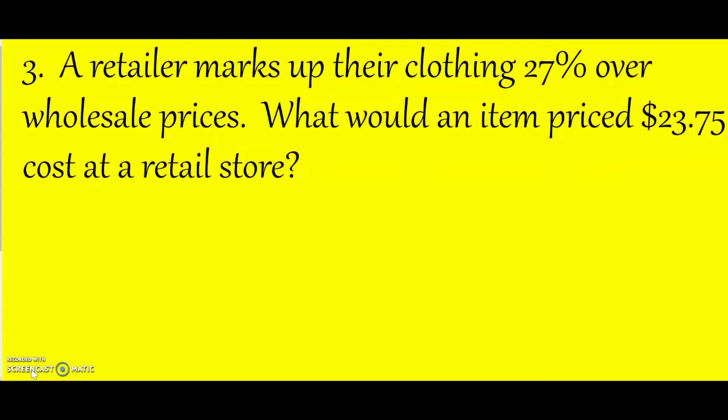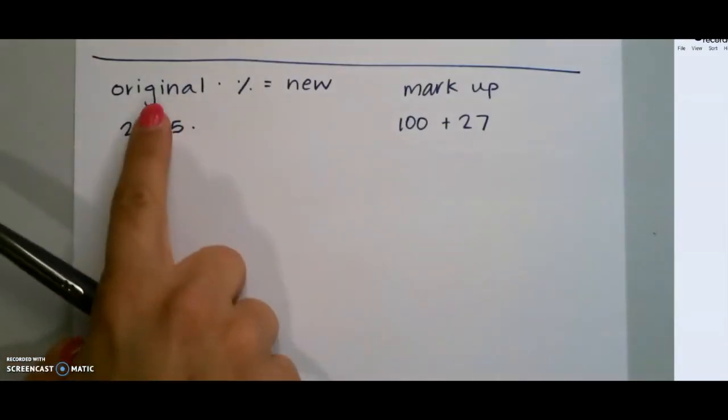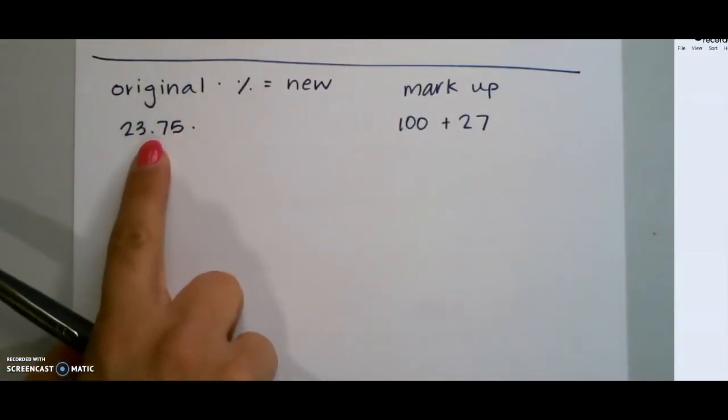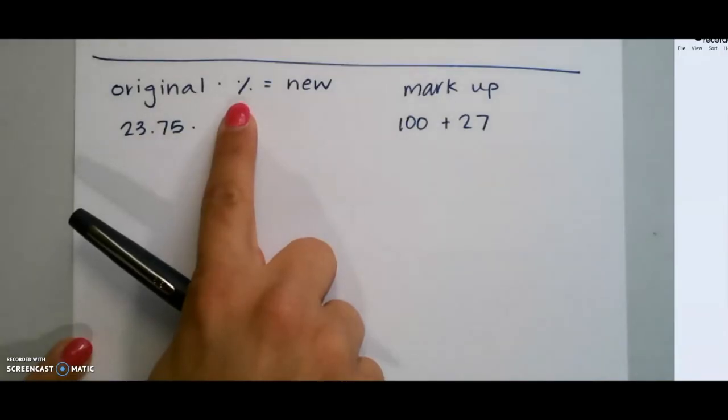For this last example, you can continue watching or pause it to solve it on your own. A retailer marks up their clothing 27% over wholesale prices. What would an item priced $23.75 cost at a retail store? This one's pretty simple because it says the words marks up. So again, we know that the original price is $23.75, but we need to figure out what the percentage is.